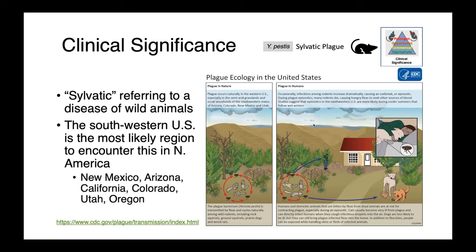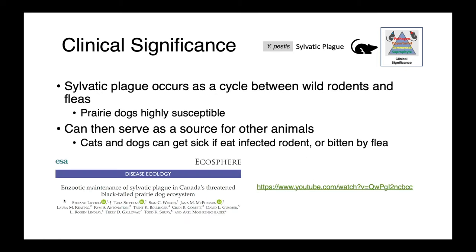The U.S. Centers for Disease Control has some excellent information on their website about sylvatic plague and the ecology of this organism in the United States. Sylvatic plague occurs as a cycle between wild rodents and fleas. Prairie dogs are actually highly, highly susceptible, and sylvatic plague actually threatens some of our ecosystems, including here in Canada.